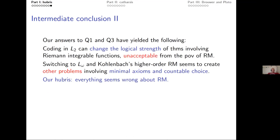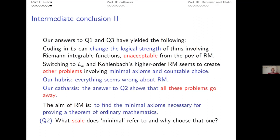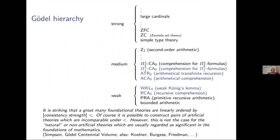This is the hubris: Dag Normann and I dared to imply that everything seems to be wrong with reverse math. People don't like this — people get verbally abusive, and I could name names. Luckily, there's also catharsis: in the last year or so, everything is actually all right with reverse math. In the remaining part I will show you that the answer to question two makes all these problems go away.